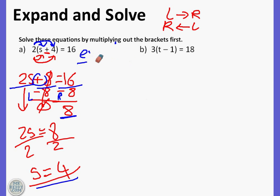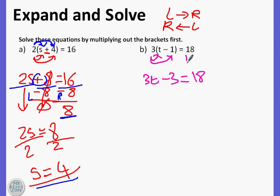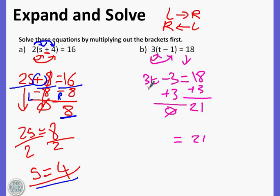Onto the second equation - really easy, we do what we did previously. We do three times t and three times one, so three times t is three t and three times one is three, which equals eighteen. To make it easier we add three, because that's the opposite. Whatever we do to the left we do to the right, giving us twenty one.